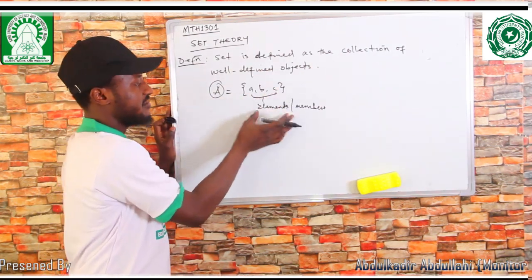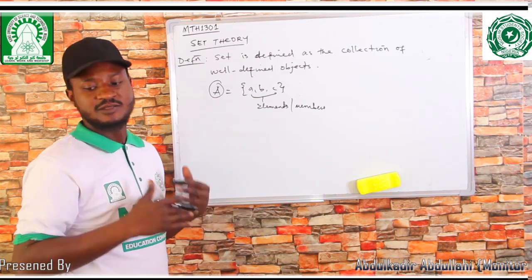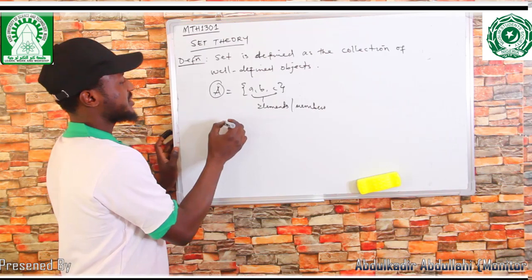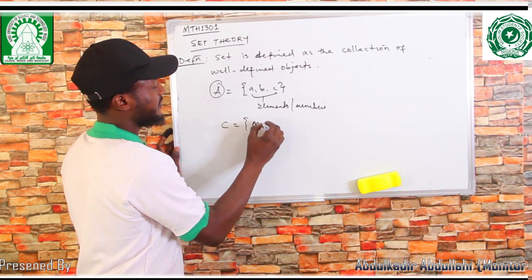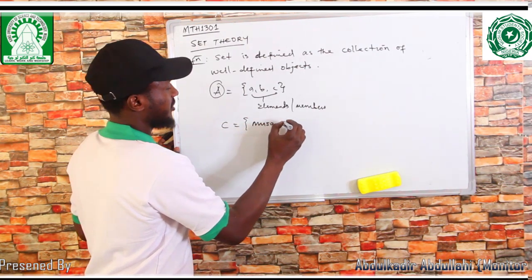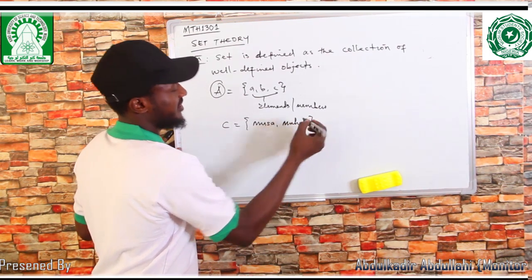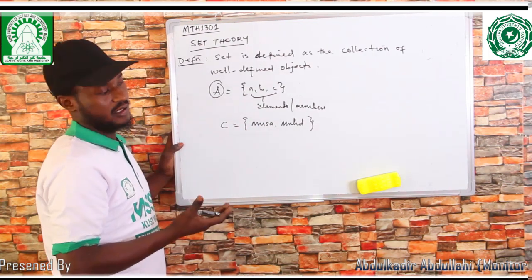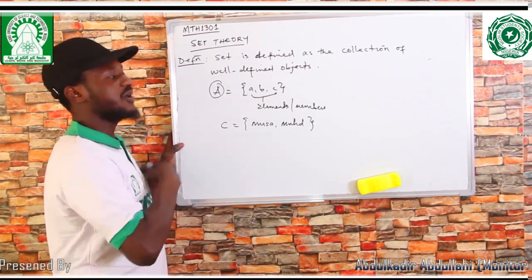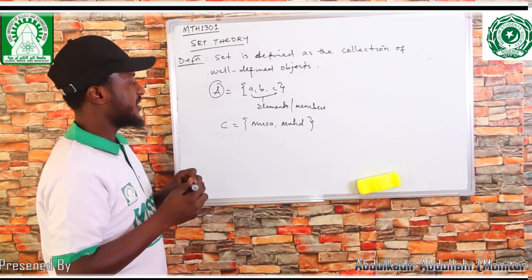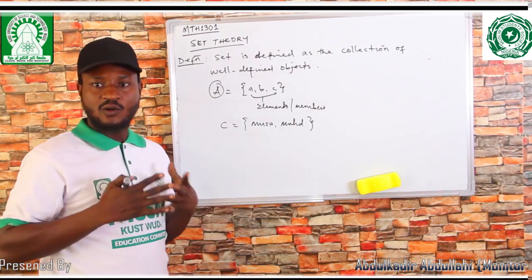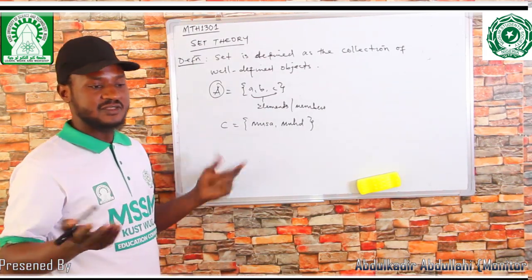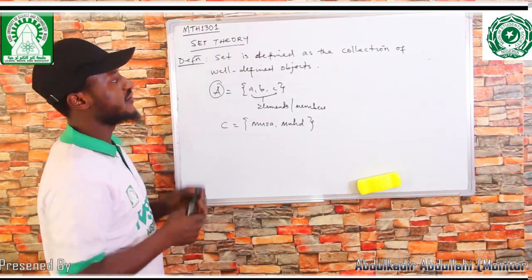The elements may be anything — just a collection of anything. It may be numbers, names of people, items, anything. For instance, I may say a set C equals {Musa, Muhammad, ...} — it's a complete set because it's a collection of names of people. Whenever you collect items or elements, it's known as a set. Under a set, there are various types of sets, and there are also methods of writing sets.